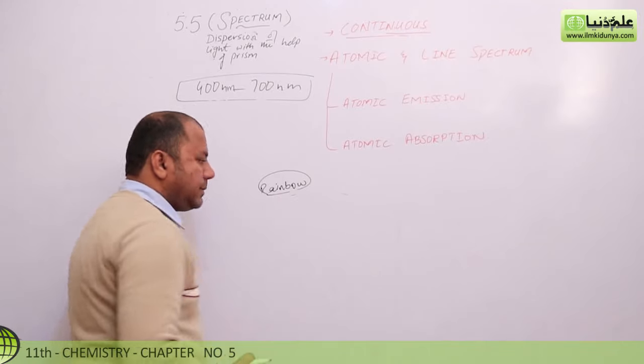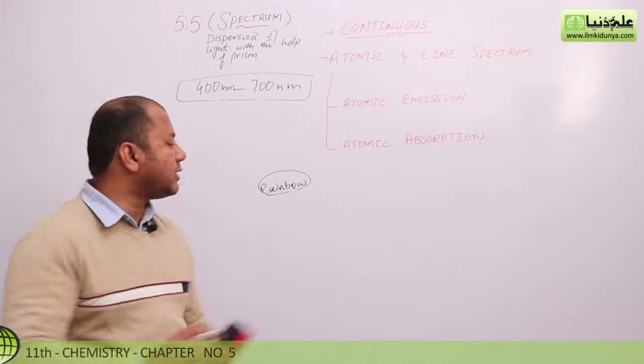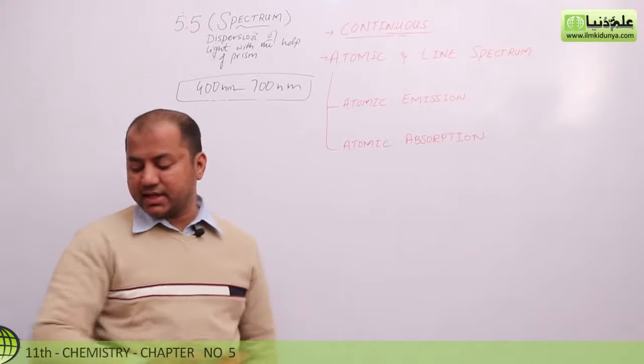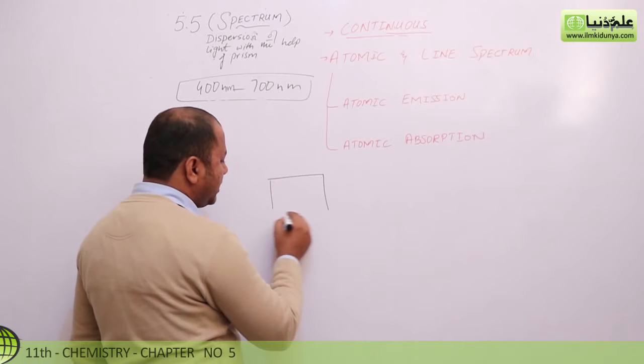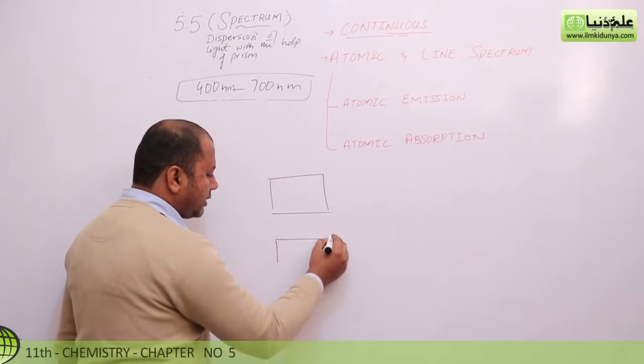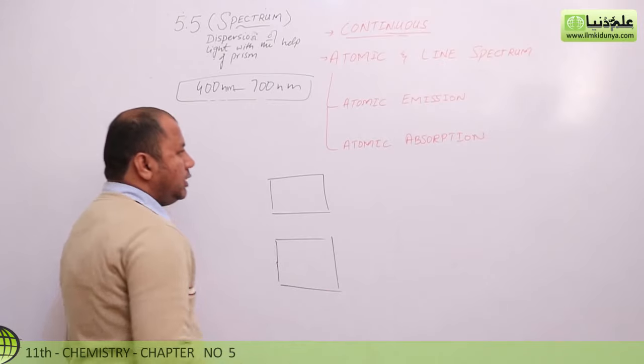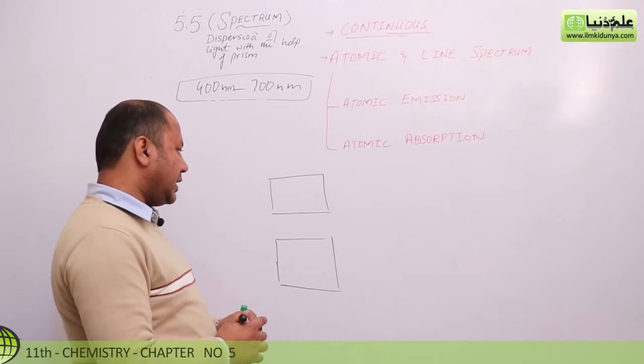Line spectrum can be further divided into two major examples. One is atomic emission spectrum and the other is atomic absorption spectrum.